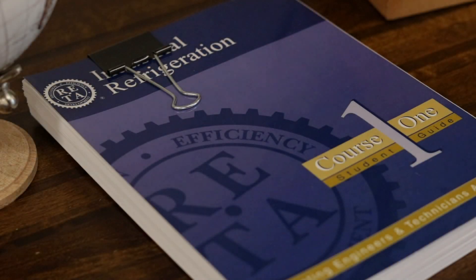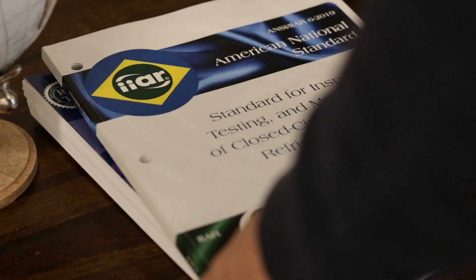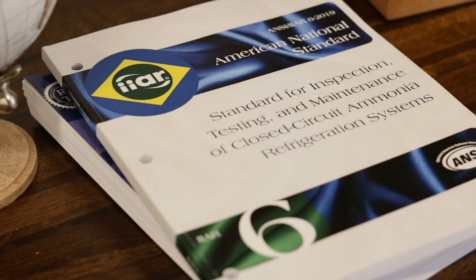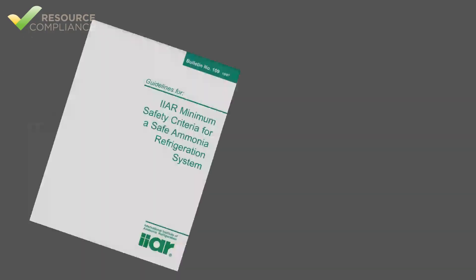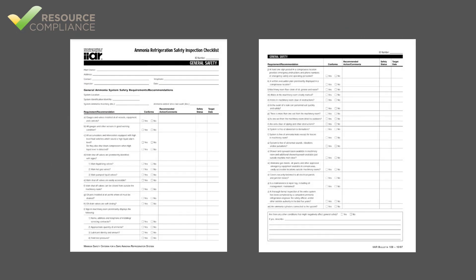The checklists contained in IIAR 6 Appendix B are derived from a legacy document named IIAR Bulletin 109. For years, the Bulletin 109 checklists, or B109s, served as the gold standard for documenting annual mechanical integrity inspections for ammonia refrigeration equipment.